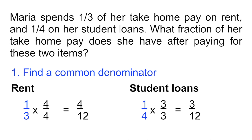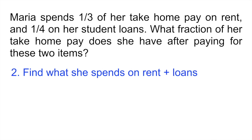So now you can see that both fractions have the same number at the bottom. They have a common denominator. So step two is now to add these two fractions and find out how much she spends on rent and loans. So we said she spent four divided by twelve on rent, plus three over twelve on student loans. That gives us seven twelfths.